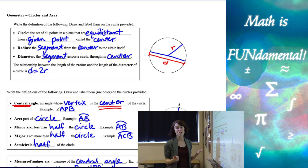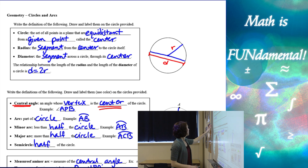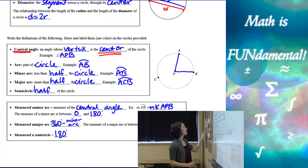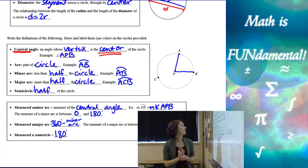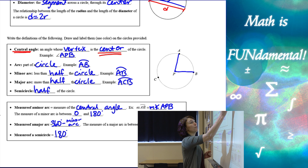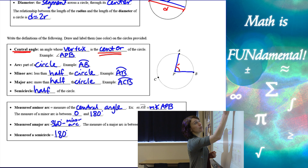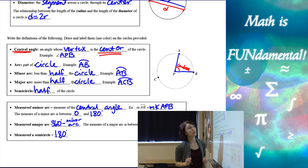The relationship between the diameter and the radius is that the diameter is 2 times the radius. A central angle is an angle whose vertex is at the center of the circle. For example, angle APB is a central angle.